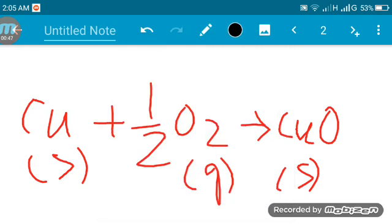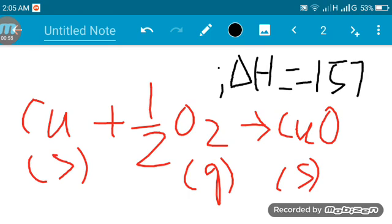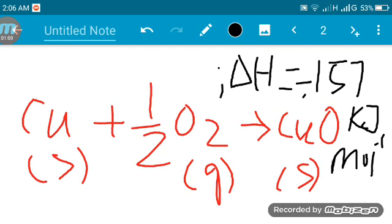The enthalpy change is minus 157. This is in kilojoule per mole, kilojoule per mole. This is the value for the reaction at the top.